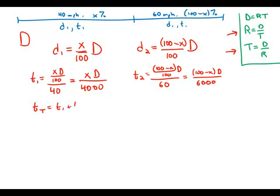So now to find the total time, of course, we add the two times together. And so what we're going to add, X D over 4,000 plus 100 minus X D over 6,000.